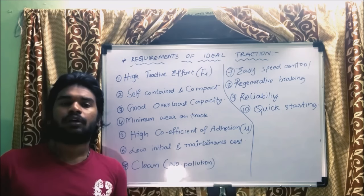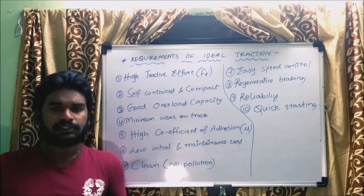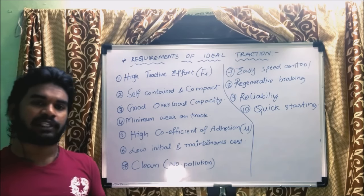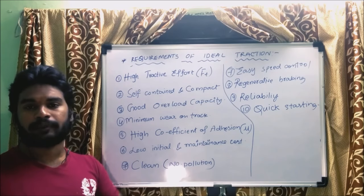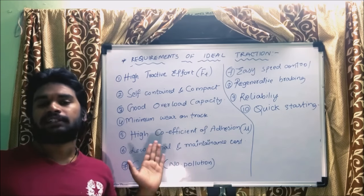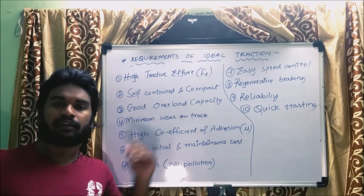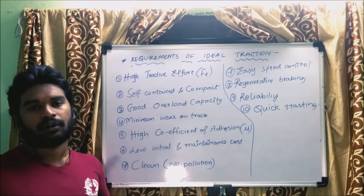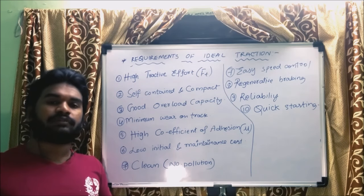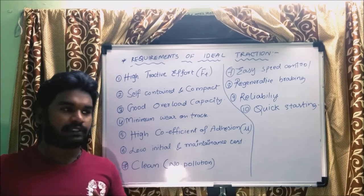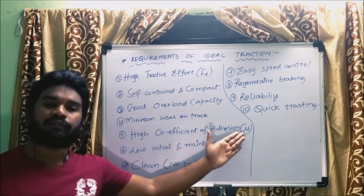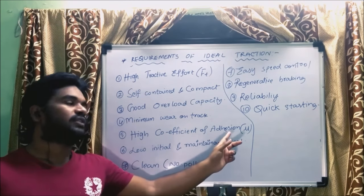What is the coefficient of adhesion? Adhesion means the sticking of any two bodies — that is why we call glues adhesives. In traction, we require the wheels to stick to the track, or in the case of cars, the tires to stick to the road. In other words, it is good road grip. We always check whether a vehicle's road grip is good or not. In traction, we should have a high coefficient of adhesion, which in simpler terms you can call road grip.